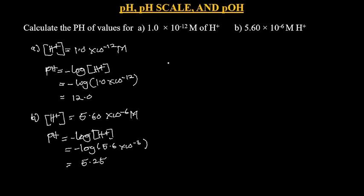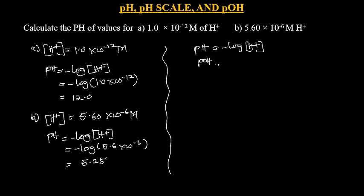Always remember that the P in pH is telling you to take the negative log of a quantity. So pH equals negative log of [H+], pOH equals negative log of [OH−], and pKW equals negative log of KW. There are many more we will see in subsequent tutorials.